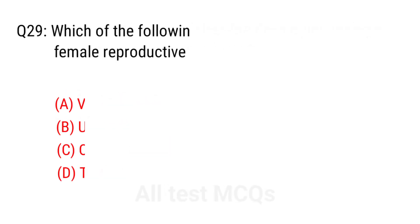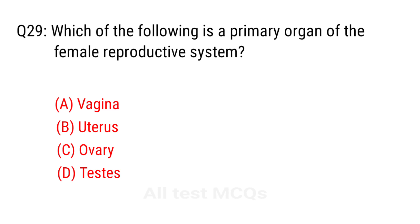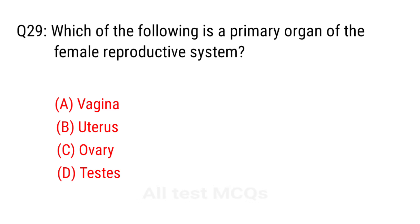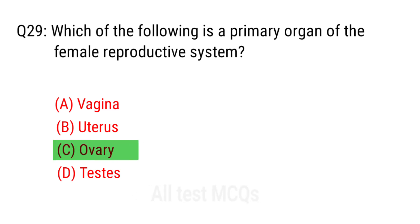Q29. Which of the following is a primary organ of the female reproductive system? The right answer is option C: Ovary.